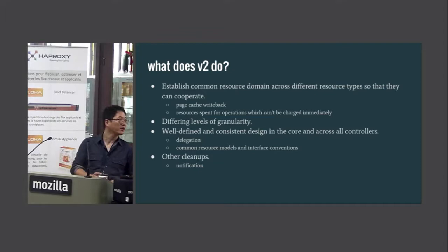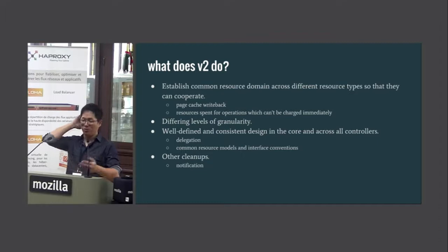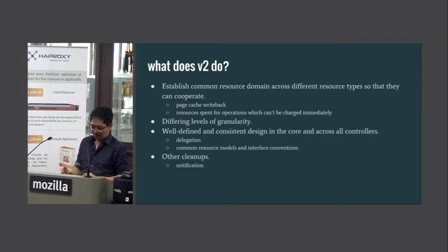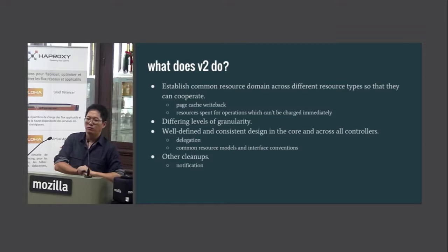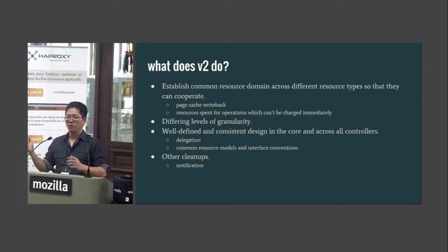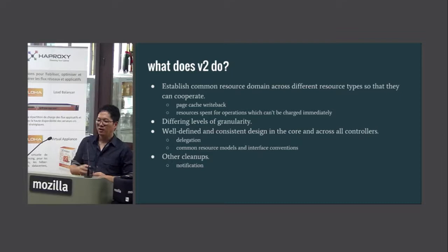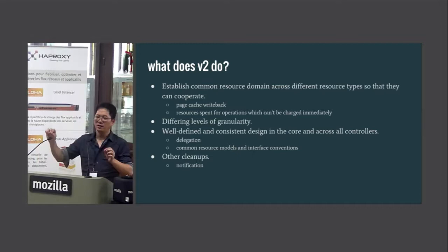So what does V2 do and how is it different from V1? The first thing is the unified hierarchy — V2 has a single hierarchy so that different resource types agree on what the resource domain is. The page cache writeback is a really good example. Who knows what the page cache is? When you do a write to a system call — a buffered write — it doesn't really go to the file system on disk directly.